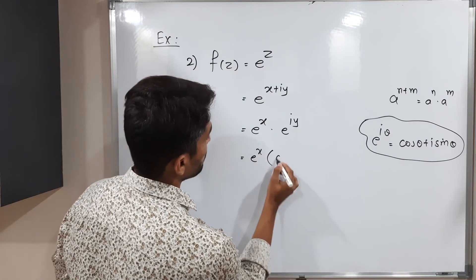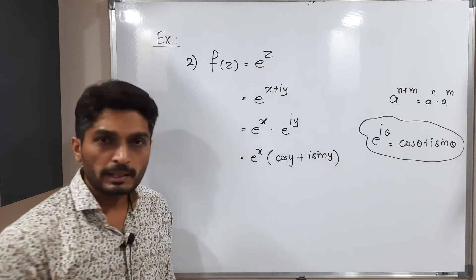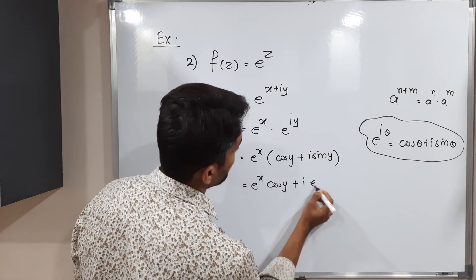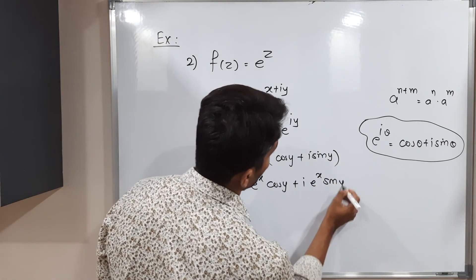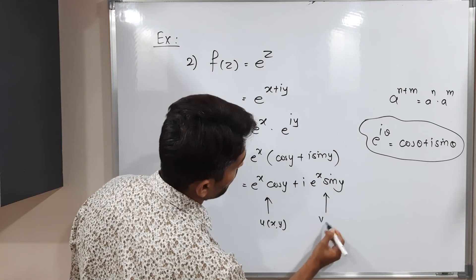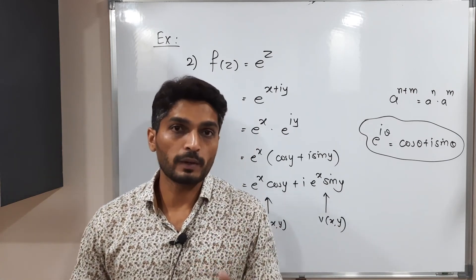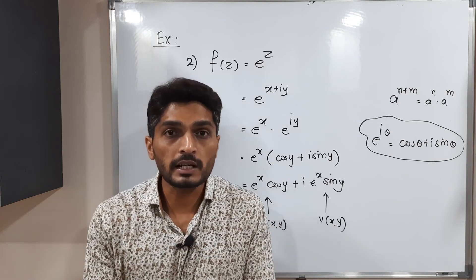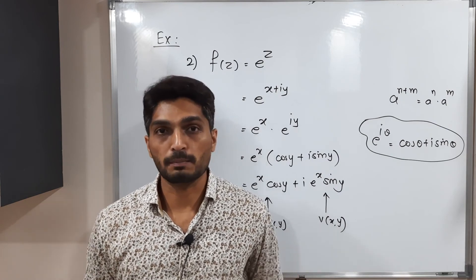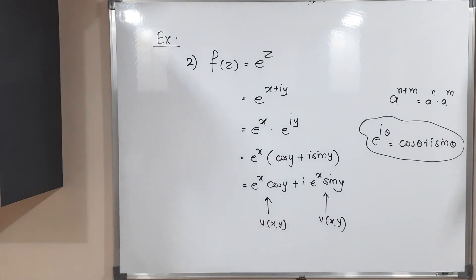Multiplying out, we get eˣ cos y + i·eˣ sin y. So the real part is u(x,y) = eˣ cos y, and the imaginary part is v(x,y) = eˣ sin y. In this way, for any complex valued function we can always express it as u(x,y) + i·v(x,y), meaning real part plus i times imaginary part. This is a very important result.